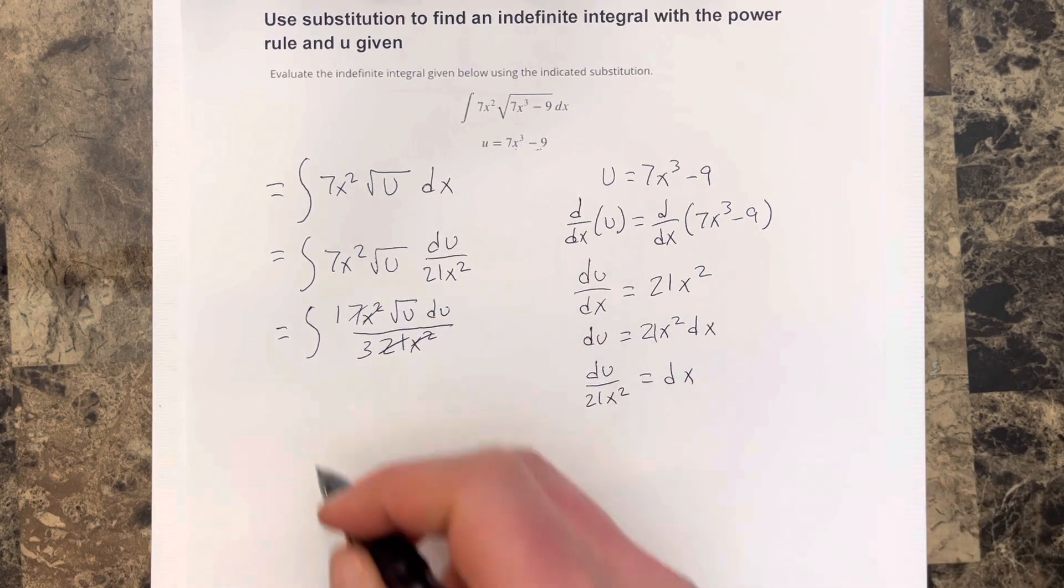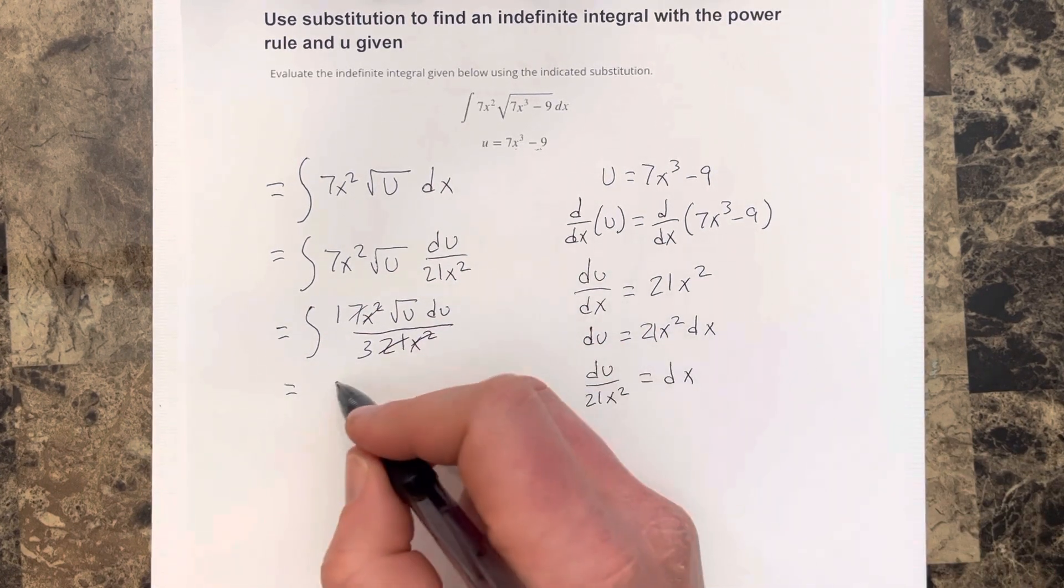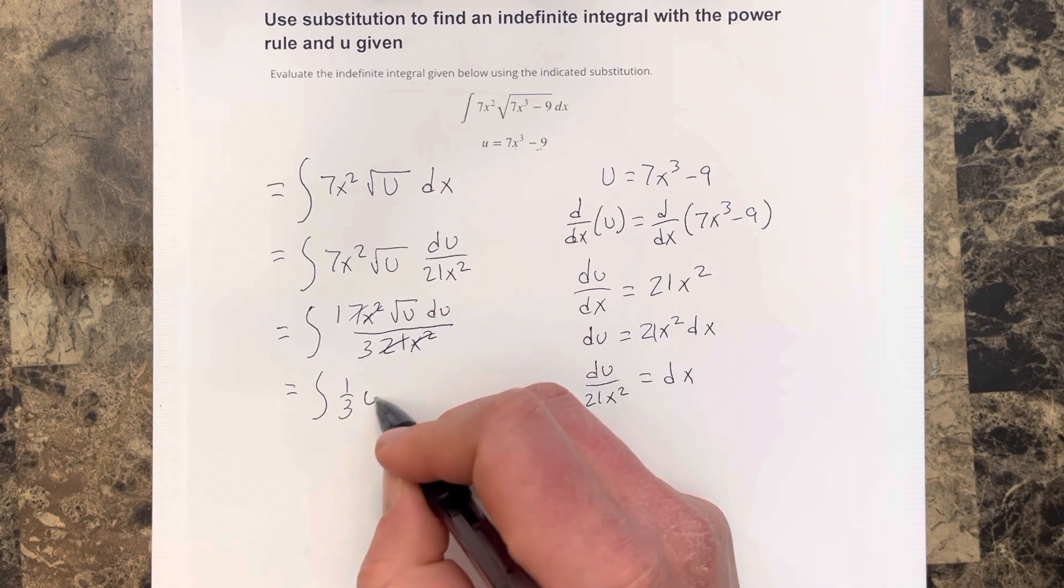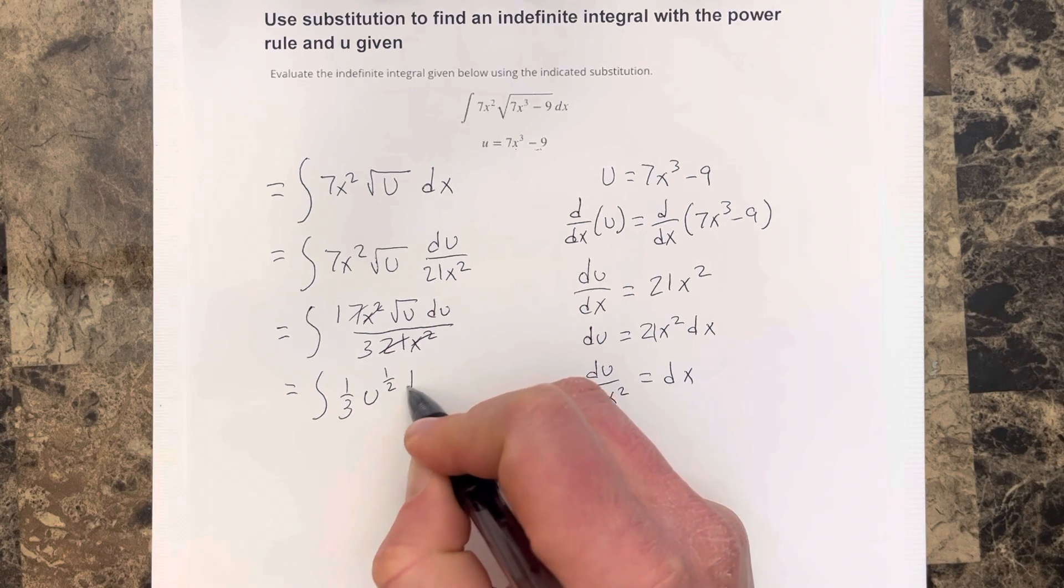The 21 will become a 3. So I end up with integral 1 third root u. Actually, I'll write that as u to the 1 half so I can do the integration next du.